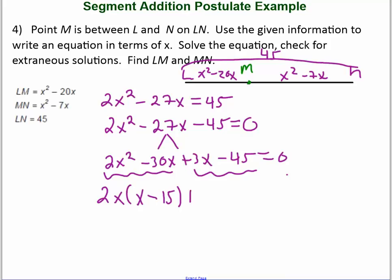And look here. When I factor out the positive 3, I do get an x minus 15. Using my distributive property rules where this is like a and this is b and c. I'm going to have x minus 15 times 2x plus 3.